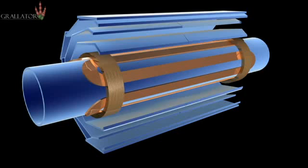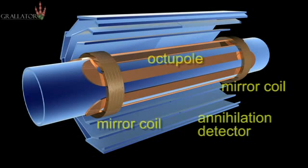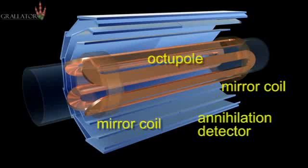The tube sticking out either end is the inner portion of the cryostat, the liquid helium vessel for the magnets. Now you see the superconducting magnets that make up the atom trap. There are an octopole and two mirror coils. These are what actually trap the antihydrogen atoms when they're produced.